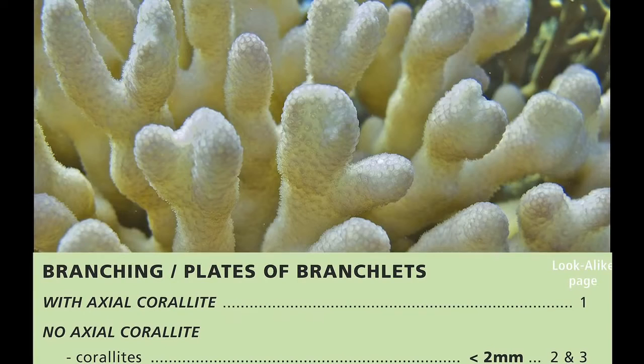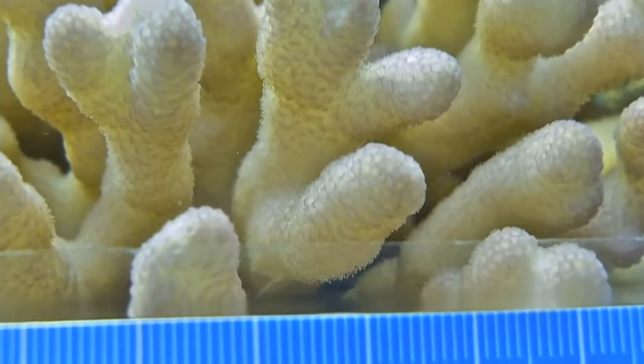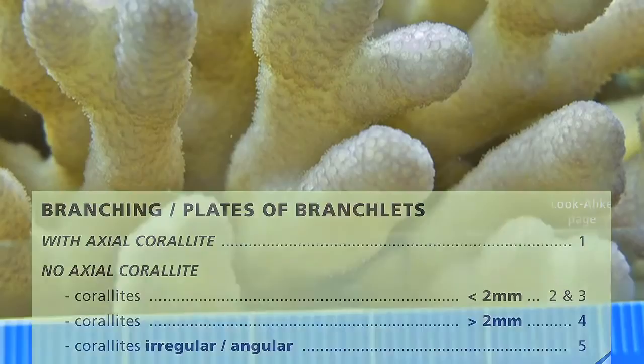Now back to our target coral — clearly it doesn't have an axial corallite. Problem solved. Okay, so now we're on our way. Let's follow through on the key page. There is no axial corallite. To select a look-alike page, we now need to answer one of the following questions: are the corallites less or greater than two millimetres? Let's look — they're pretty small, so let's go with less than two millimetres, which suggests pages two and three.